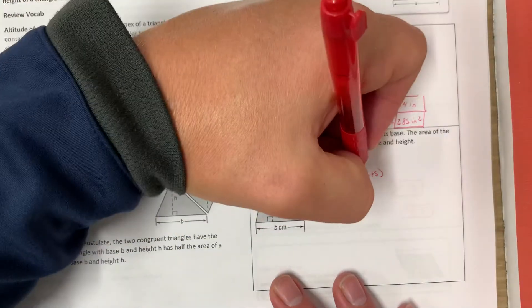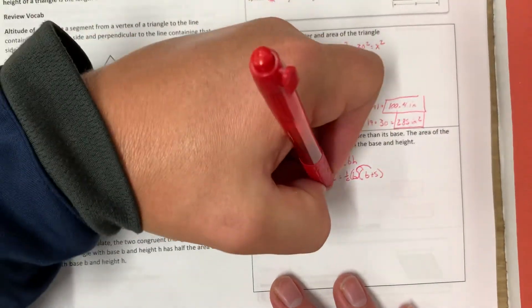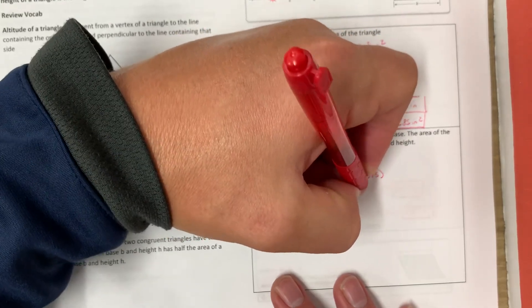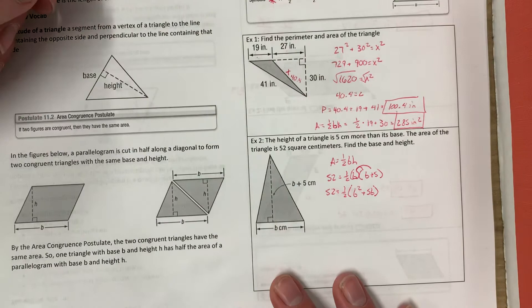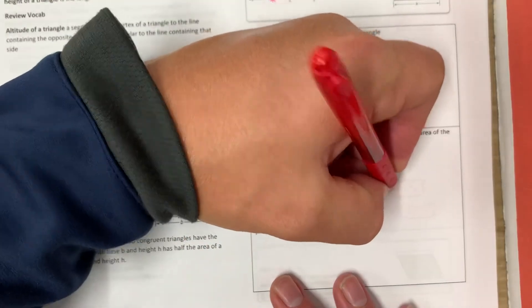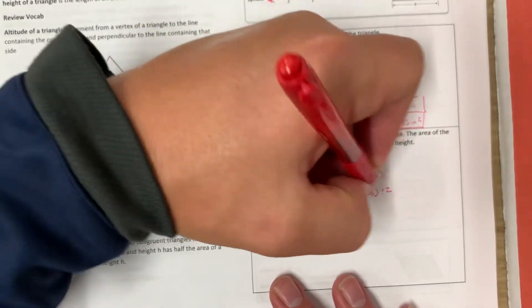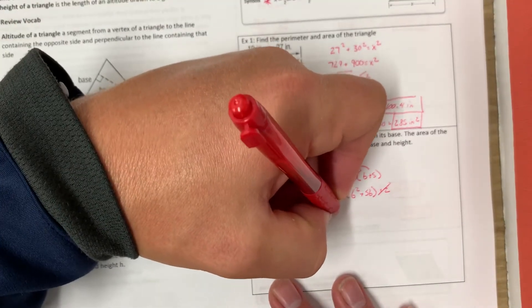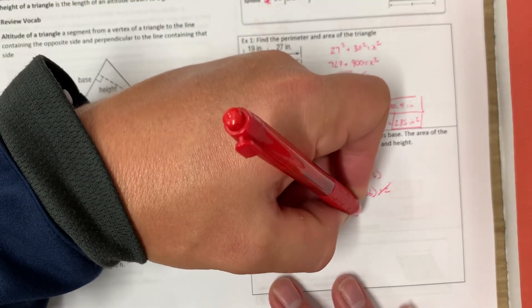We're going to distribute that B first. So 52 equals one half times B squared plus 5B. Now I'm going to multiply everything by 2 to cancel out the one half on this side. So I'd have 104 equals B squared plus 5B.